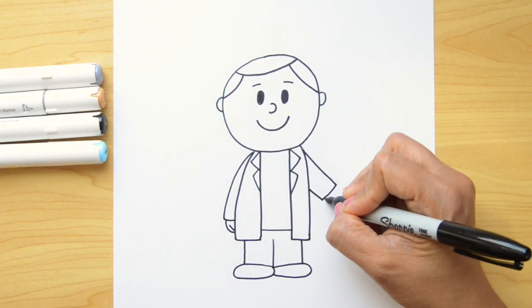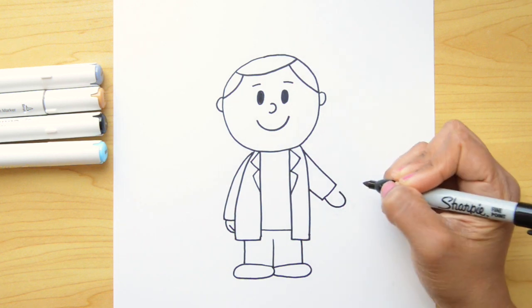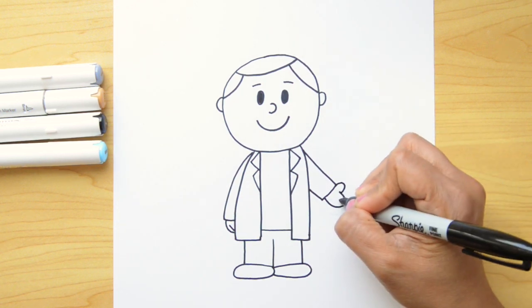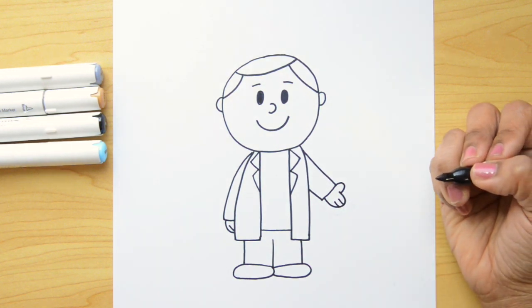And let's finish the hand here. I'm just gonna do half a circle and a line. And in the other side, I'm gonna do a U shape. And now a sideways U shape and two little lines inside for fingers. Perfect.